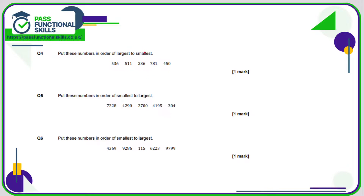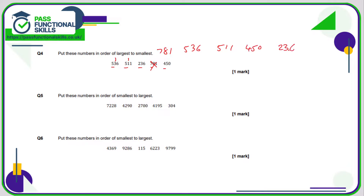Question 4: largest to smallest. They're all three-digit numbers, so let's look at the first digit: 5, 5, 2, 7, 4. Of those, 7 is the biggest, so 781 is the largest. 5 is the next biggest, but we've got two 5s, so we need to look at the second digit — 3 versus 1. 3 is bigger than 1, so 536 comes next, followed by 511 and 2, then 3, 6, 4. 4 is bigger than 2, so 450 comes next, and the smallest number is therefore 236.